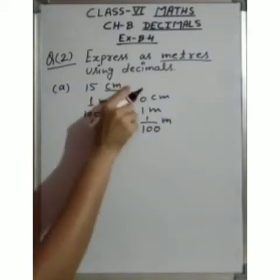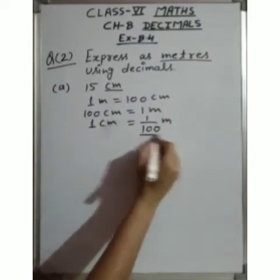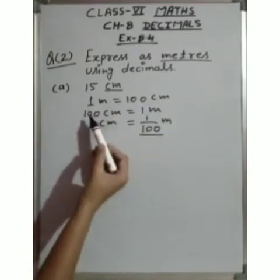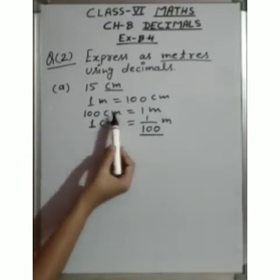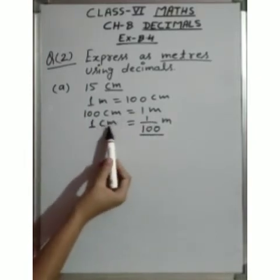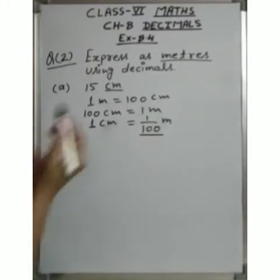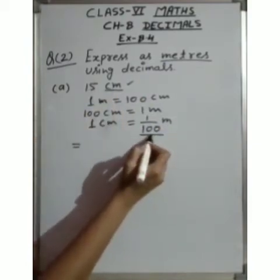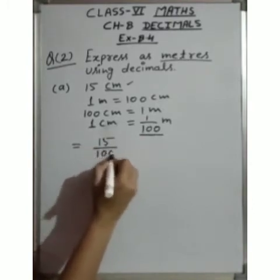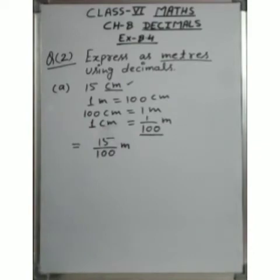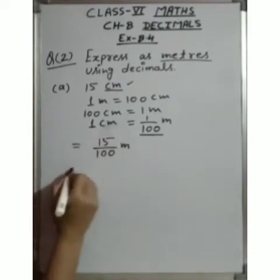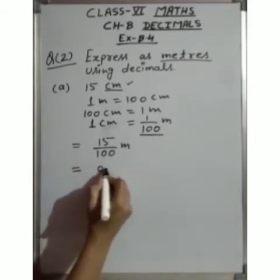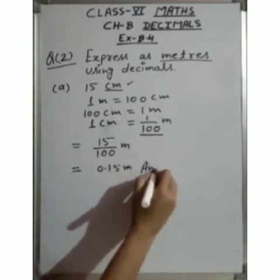To convert centimeters to meters, we divide by 100. For example, 15 centimeters divided by 100 = 15 upon 100 meters. There are two zeros, so the answer is 0.15 meters — the decimal point comes 2 numbers from the right. This is the answer.